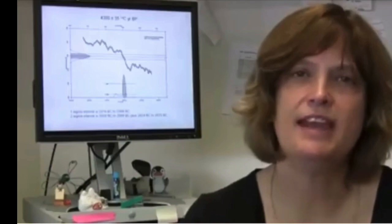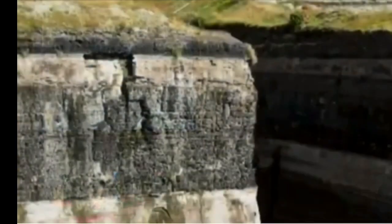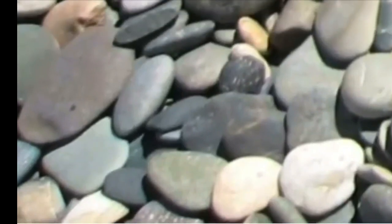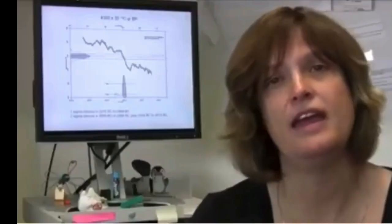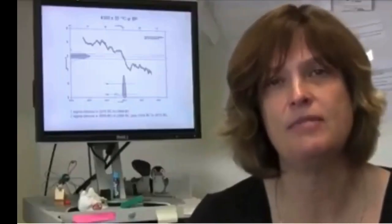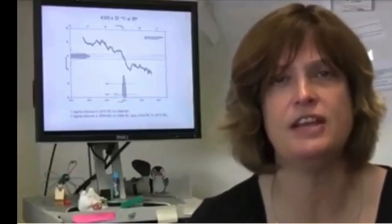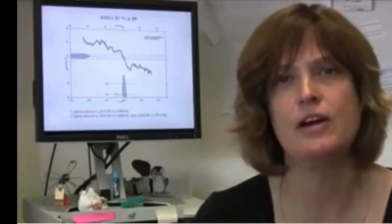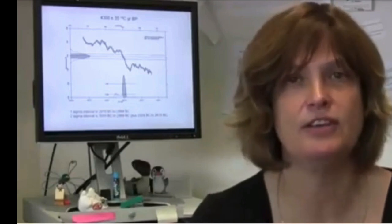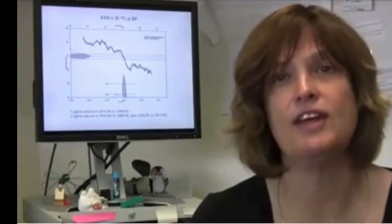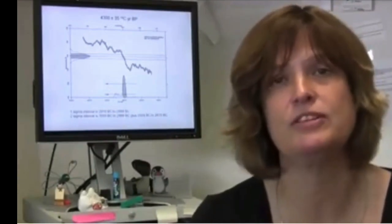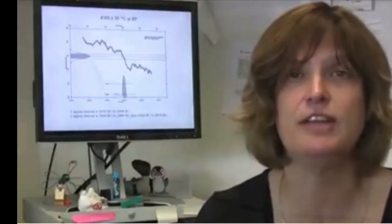The types of things we can't radiocarbon date are geological materials, so we can't date stone or glass. And we also can't date some things that are beyond the dating range of radiocarbon. We can only radiocarbon date back to about 50,000 years ago because of the half-life of radiocarbon, which is 5,730 years.